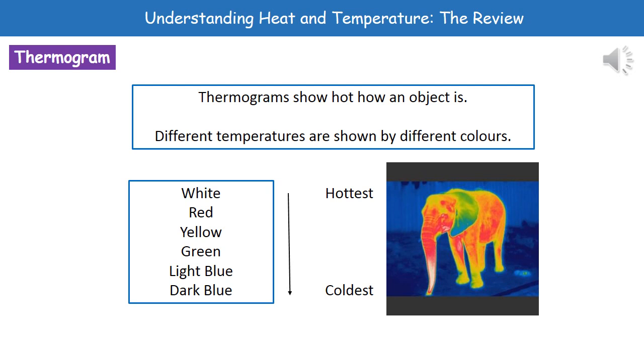Now, if you have a look at the different colors we can see there, the hottest part of the elephant is there on the trunk because it's the white part. Then we go through red, yellow, green, light blue, and finally the coolest part of the whole picture is the dark blue. So the surroundings there are the coldest of all those bits.